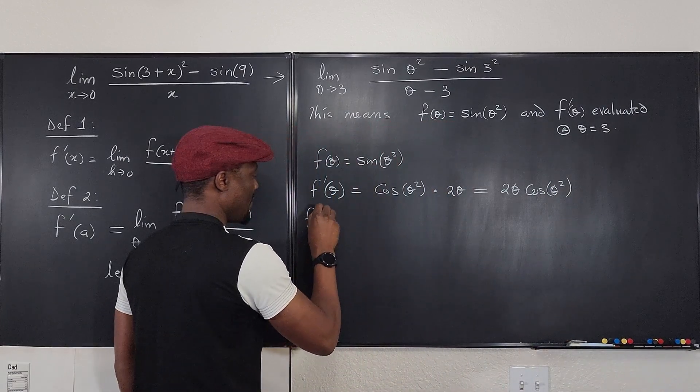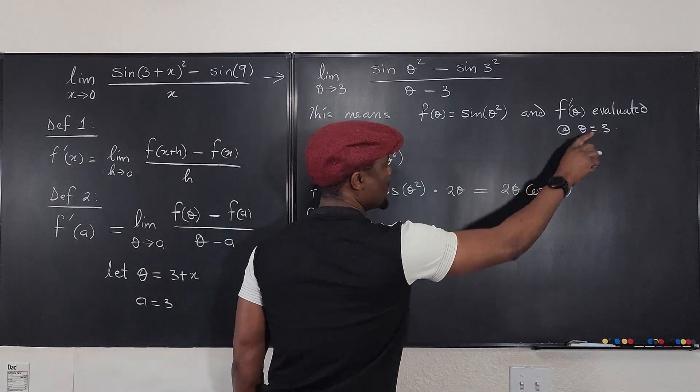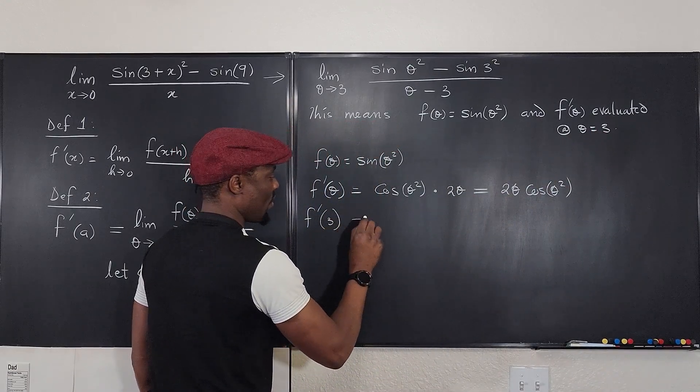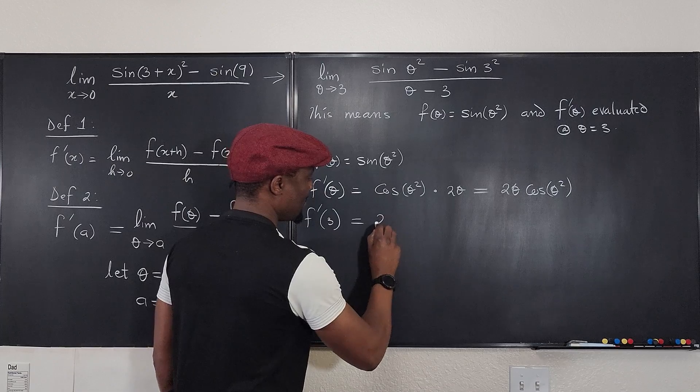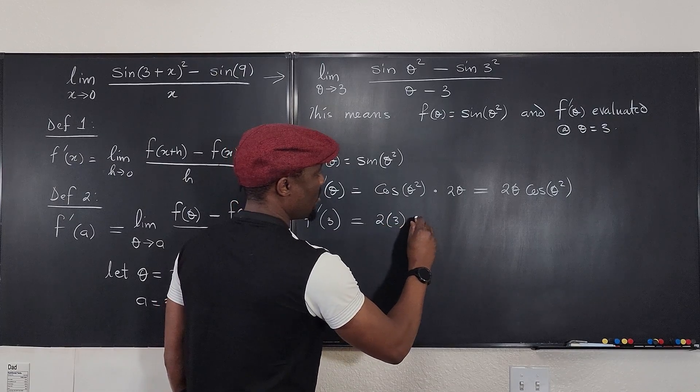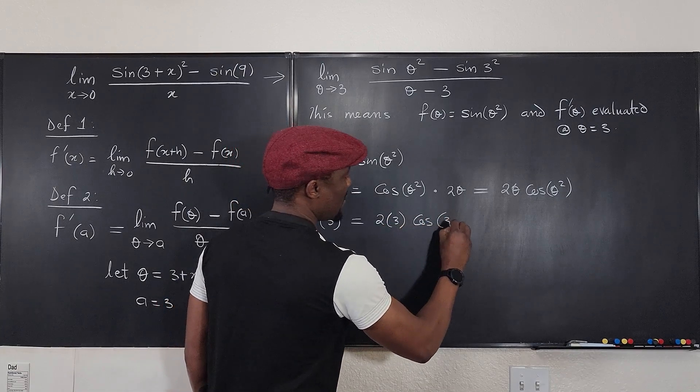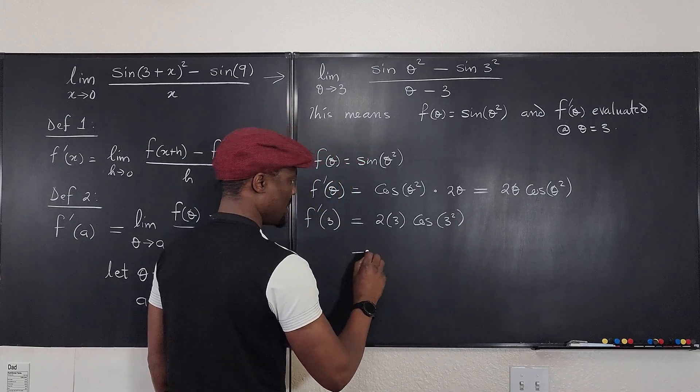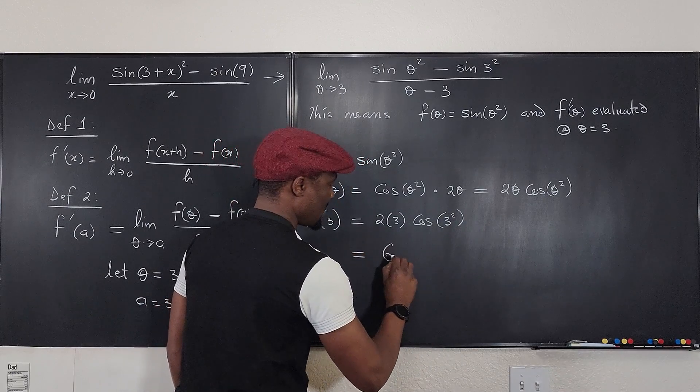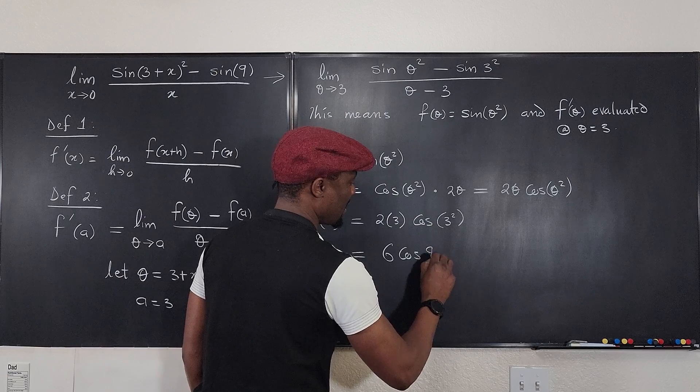If we evaluate this when theta is equal to 3, we're going to get 2 times 3 multiplied by the cosine of 3 squared, which is equal to 6 cosine 9. That is the limit of this function.